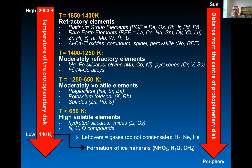The first elements to condense at temperatures between 1800 to 1400 kelvins are the refractory elements. Among those we have the platinum group elements, or PGE, like rhenium, osmium, iridium, and platinum. We also find rare earth elements like lanthanum, cerium, neodymium, dysprosium, ytterbium, and lutetium. Among the refractory elements we also have zirconium, hafnium, molybdenum, tungsten, thorium, and uranium.